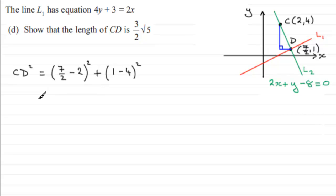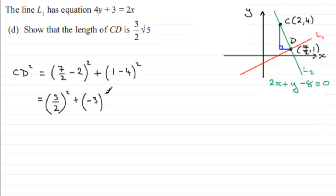4 minus 1 would have been 3, and 3 squared is 9. 1 minus 4 is minus 3, but if you square it it's still 9 — so no difference there. We've got 3 and a half minus 2, which is 1 and a half. It's better to keep it as a top-heavy fraction: 3 over 2. So we've got (3 over 2) squared, and then 3 squared. That gives us 9 over 4, plus 9.